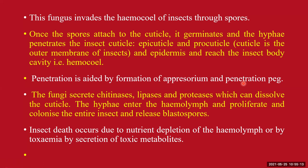Once inside the hemocoel, there is a fluid called hemolymph. The fungal hyphae penetrate inside the hemolymph and proliferate, colonizing the entire insect body cavity. They utilize the hemolymph — a nutritious fluid — and release blastospores inside the body cavity. The fungus also secretes chitinases, lipases, and proteases, which help dissolve the cuticle wall. The insect dies due to nutrient depletion, as the fungus feeds on the hemolymph, or by toxemia through secretion of toxic metabolites.